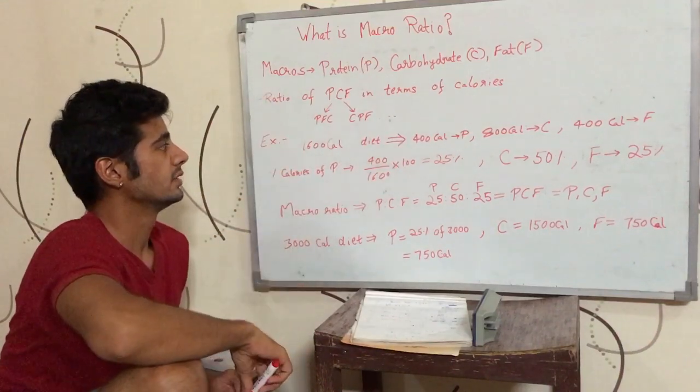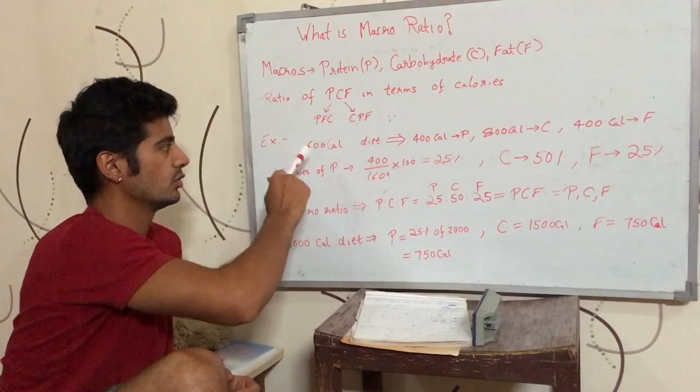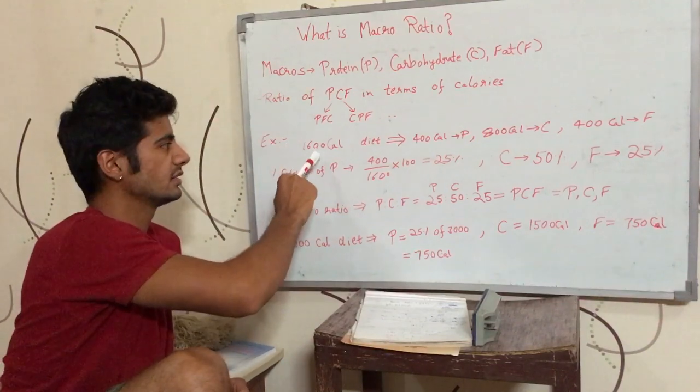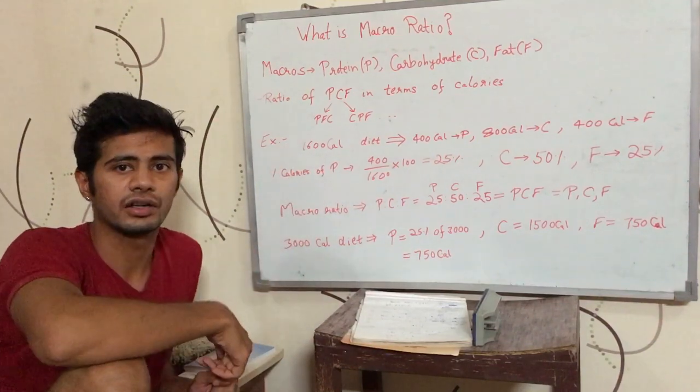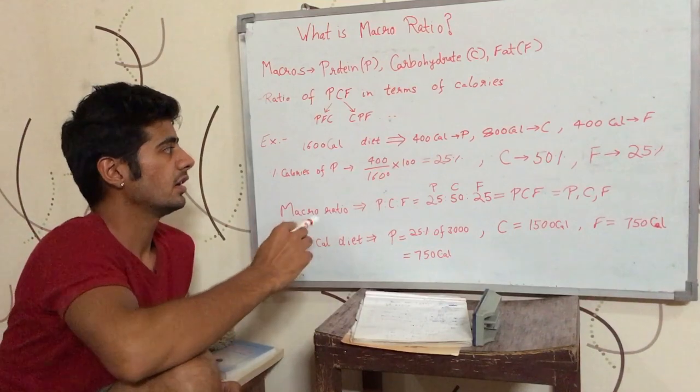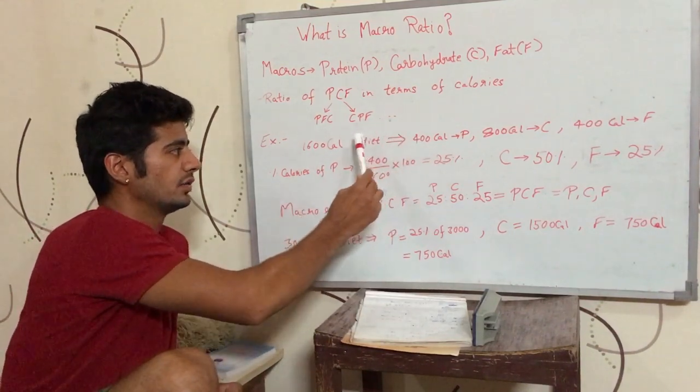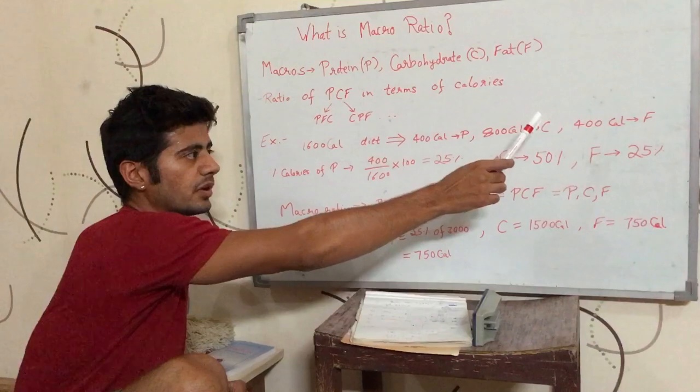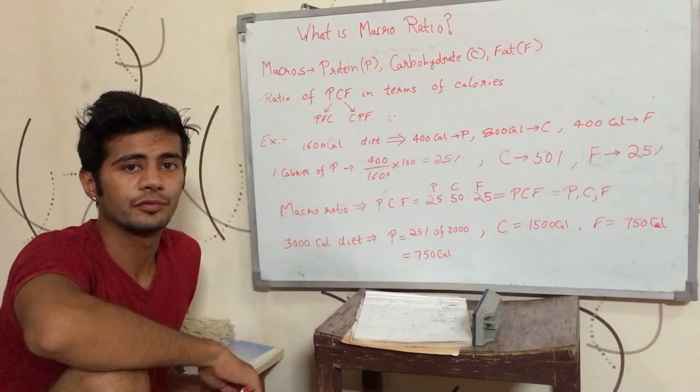Now, what macro ratio is, we will try to understand it with an example. Let's say there is a 1600 calorie diet of a person and 400 calories of that diet comes from protein, 800 calories comes from carbohydrate and 400 calories comes from fat.